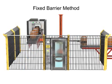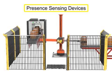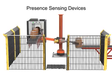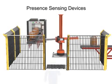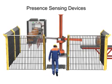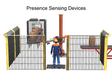Another method of protecting the robot's work envelope employs the use of presence sensing devices. These devices detect the entry of a person into a hazardous area and slow or stop the robot. Pressure mats are typically installed just outside the robot's work envelope. When a person steps on the mat, a signal is sent to the robot to stop or slow work.